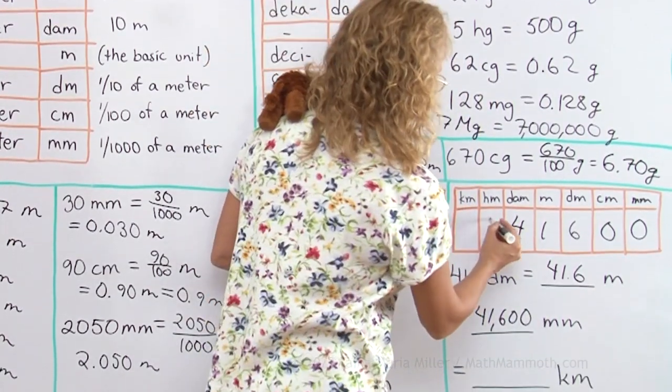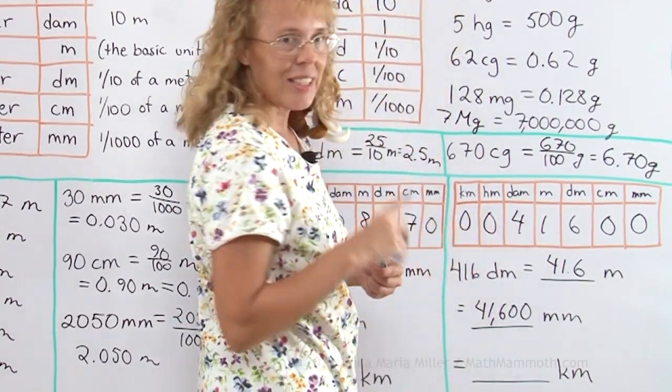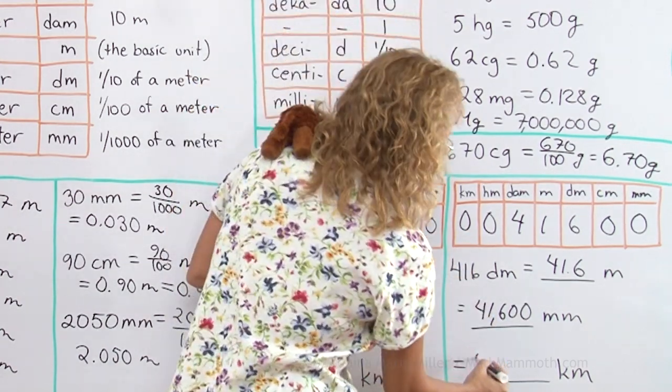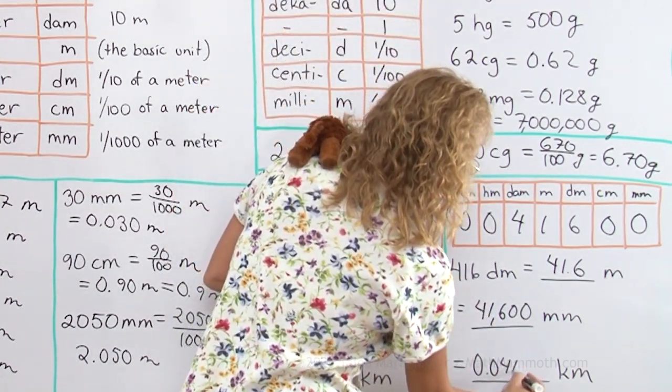And then as kilometers again, my decimal point would be right here. So I get 0.0416.